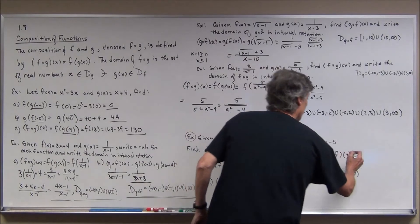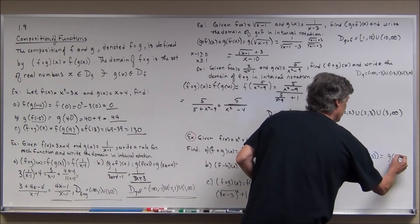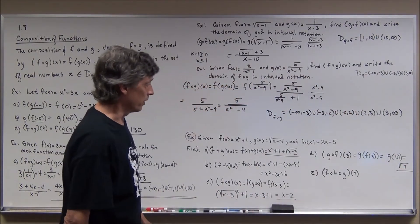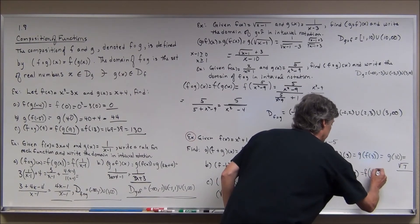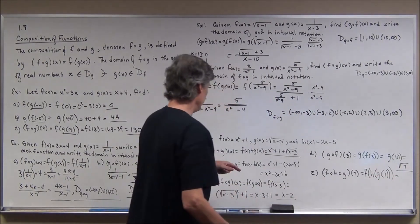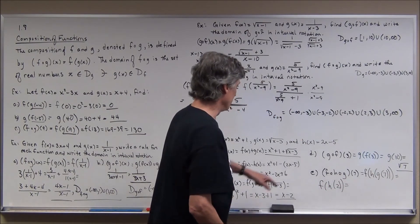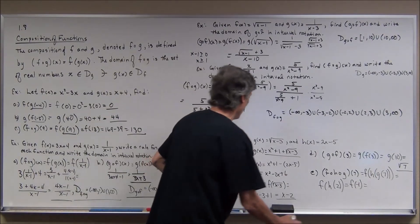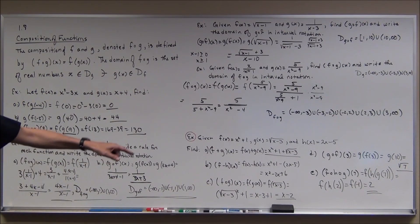g circle f of 3: this is g of f of 3. f of 3 is 3 squared plus 1, which is 10. So this is g of 10, which is the square root of 10 minus 3, the square root of 7. For the triple composition f of h of g of 7: first g of 7 is the square root of 7 minus 3, which is square root of 4, which is 2. Then h of 2 is 2 times 2 minus 5, which is negative 1. Then f of negative 1 is negative 1 squared plus 1, which is 2.